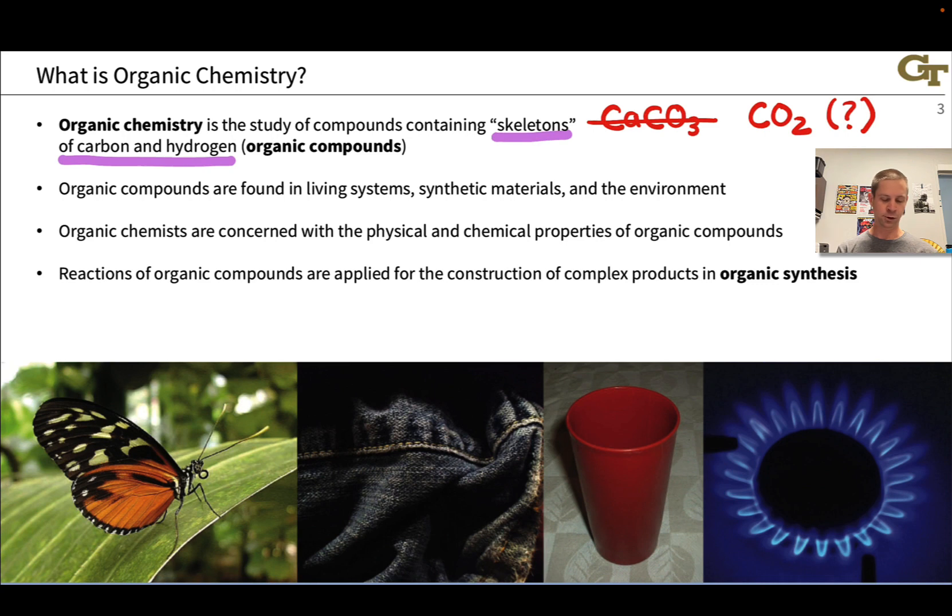And organic chemists are basically concerned with the physical and chemical properties of organic compounds. How do they react? Those are the chemical properties. What are their melting points, boiling points, optical rotation, solubility, all those physical properties. Organic chemists are worried about all these kinds of things.